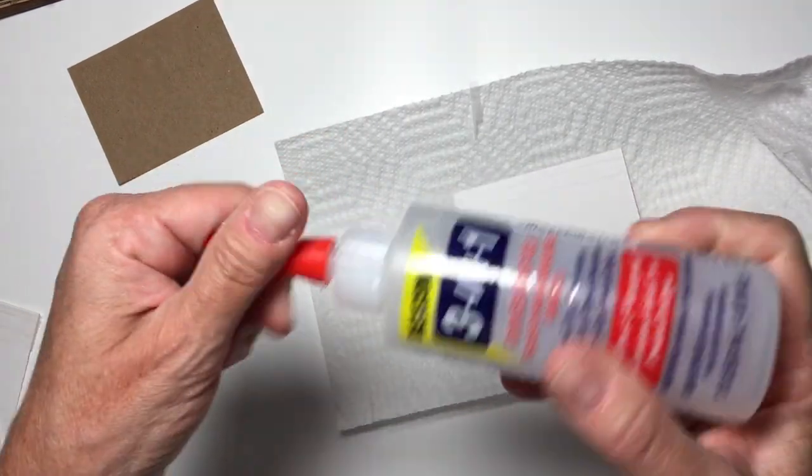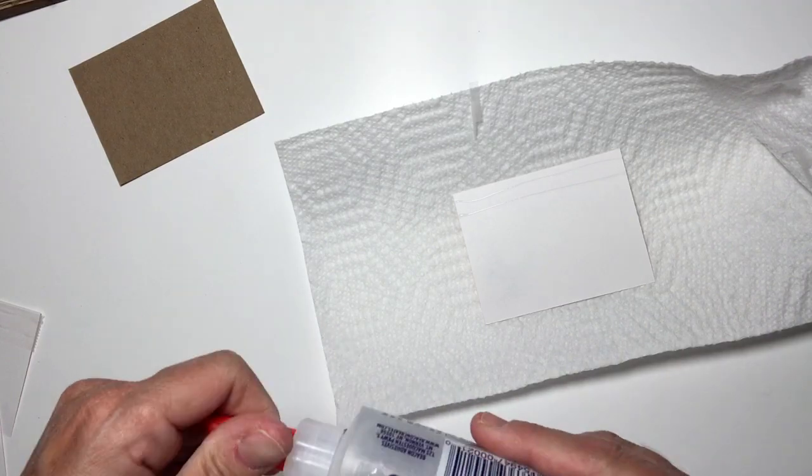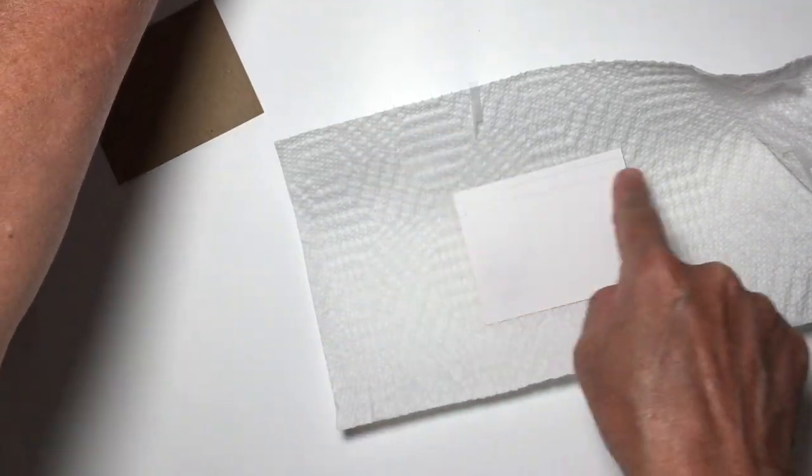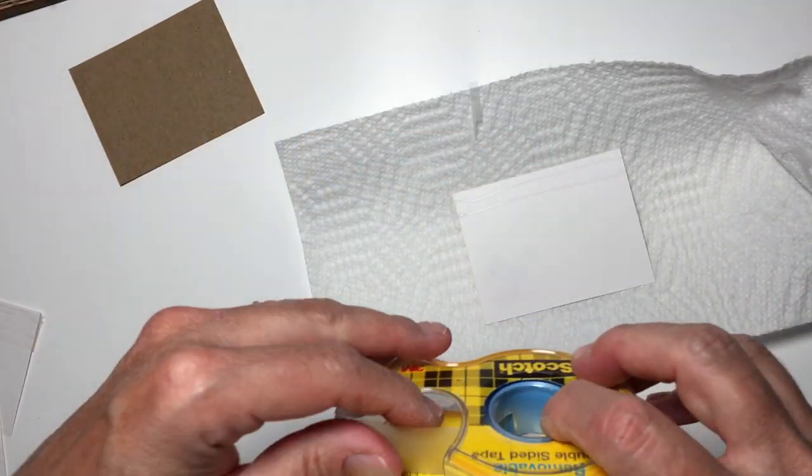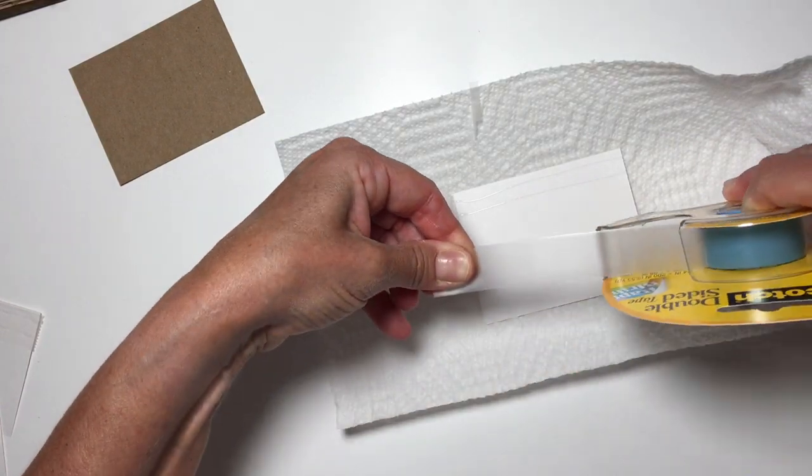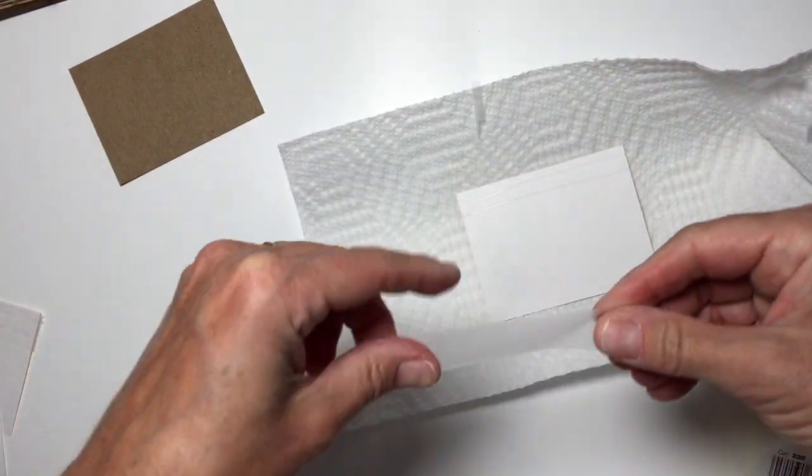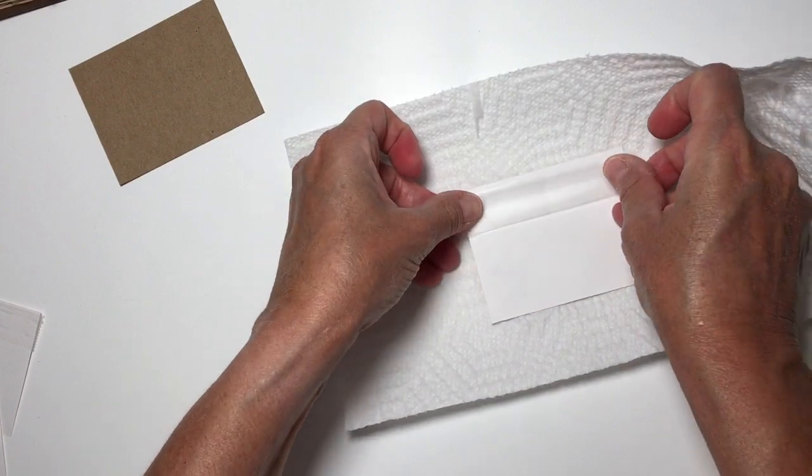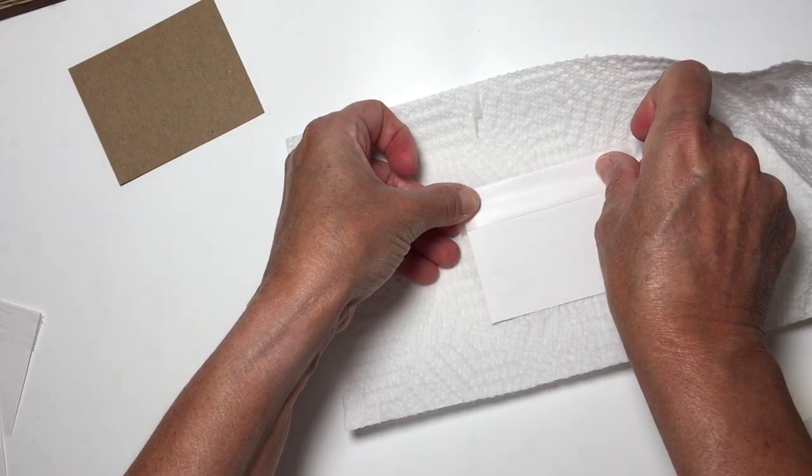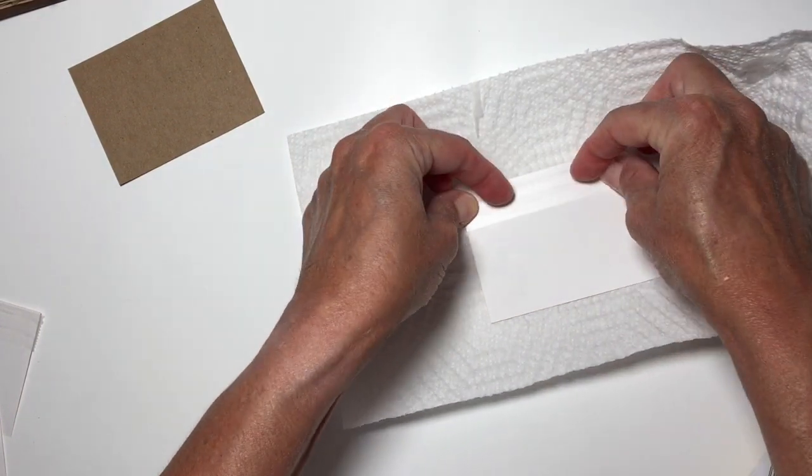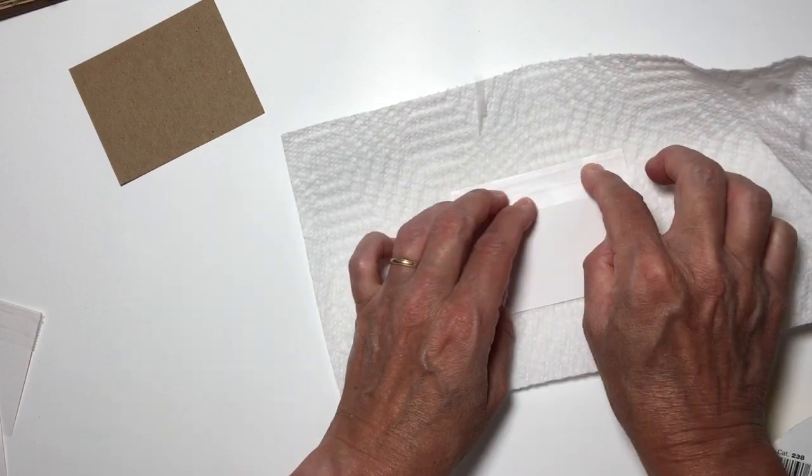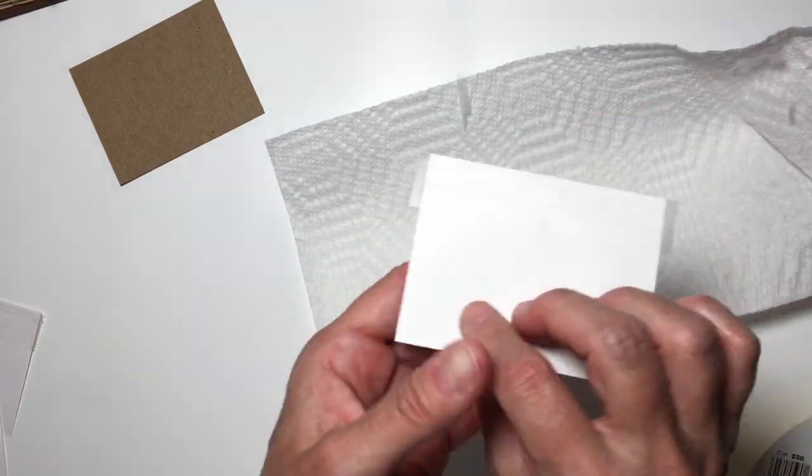Then you want to pull off enough tape to go the whole width of the top, and I try to get it pretty close to the top. Now I do have some overhang, I'm going to cut that off.